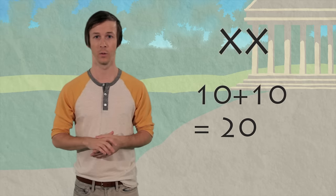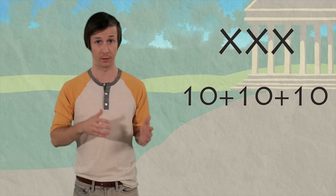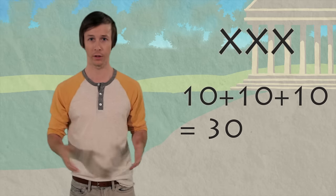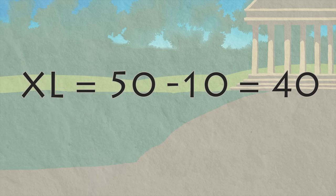What's this number? XX. That's ten plus ten equals twenty. What about XXX? Ten plus ten plus ten, so thirty. But how do you write forty? Now remember, it can't be XXXX. So it's XL. Take ten away from fifty and you get forty.